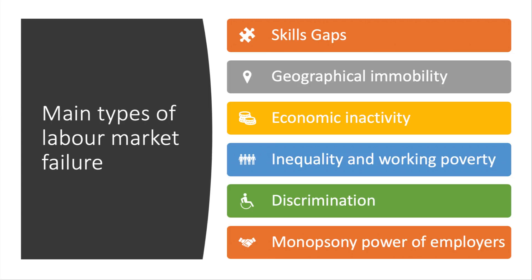We're going to look at six examples of labour market failure. In this video we'll look at the first four: skills gaps, immobility of labour, economic inactivity, and inequality and working poverty. Then in the second video we'll take a look at discrimination and monopsony — the power of employers.